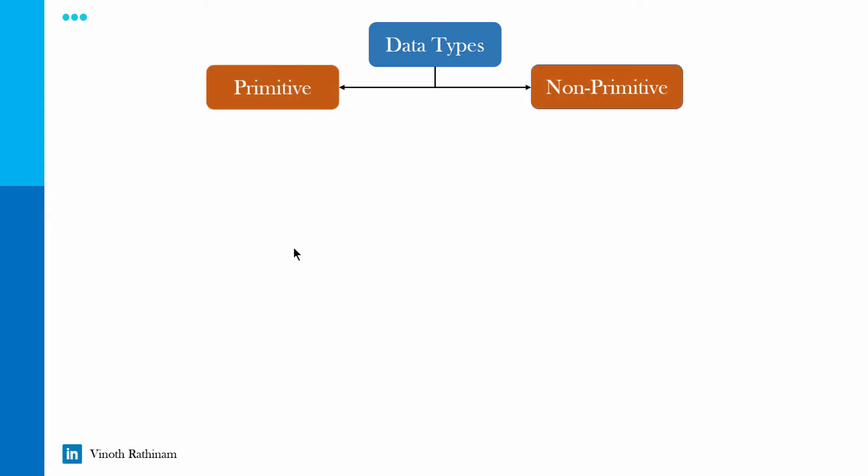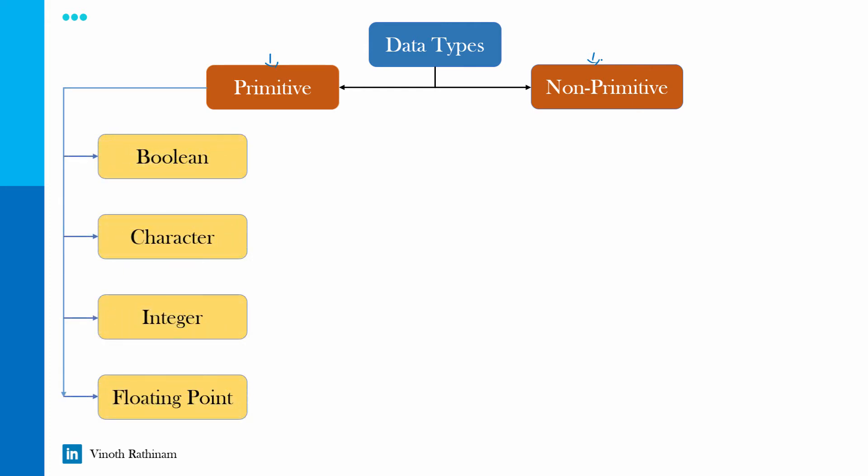Data types consist of two types, one is primitive, another one is non-primitive. Then in primitive we have four classification: boolean, character, integer and floating point. In non-primitive we have string, array and classes.